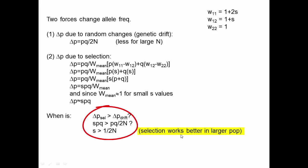So when is selection more effective than drift? When s is larger than 1 over 2N. This tells us that selection actually works better in larger populations, because for a given value of s, it will exceed 1/2N more often when population size is very large. So selection is generally much more effective in larger populations, and drift will be more important in smaller populations.